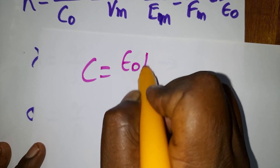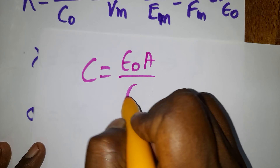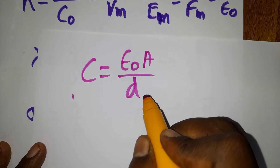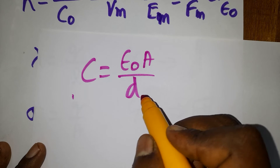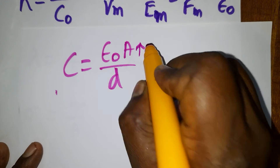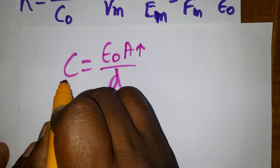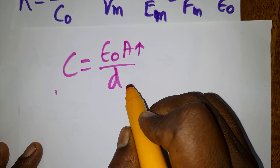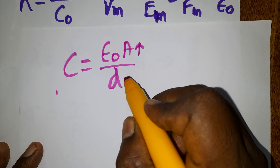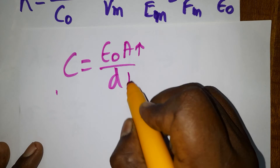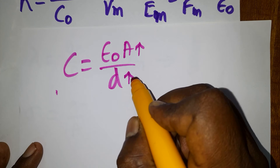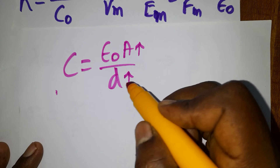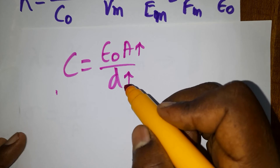The capacitance of a parallel plate capacitor is C = ε₀A/d. Capacitance is directly proportional to area A, and inversely proportional to distance d between the plates. More area allows storing more charge; more distance decreases capacitance.